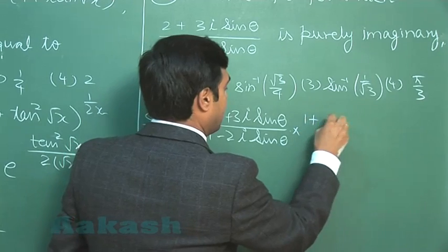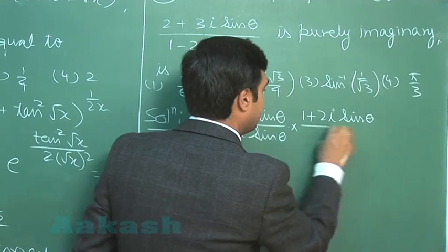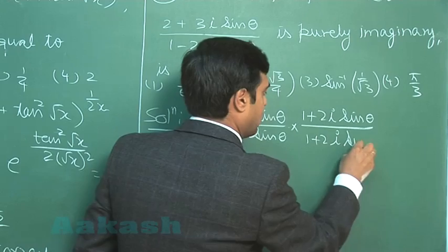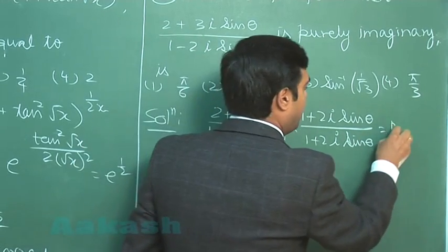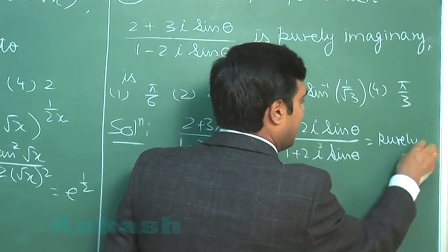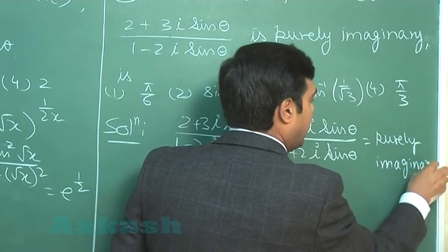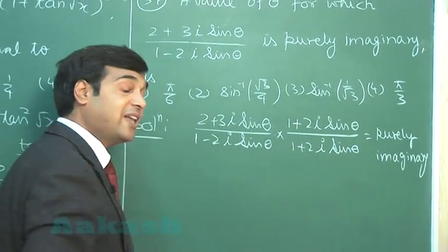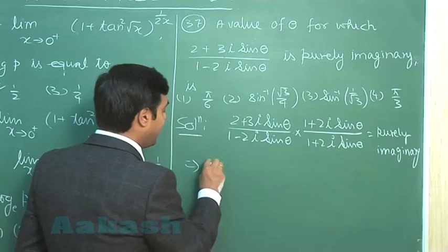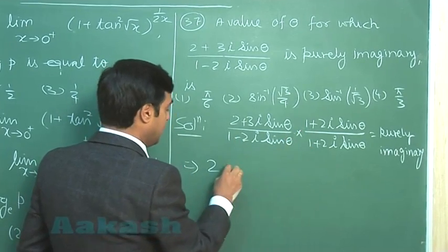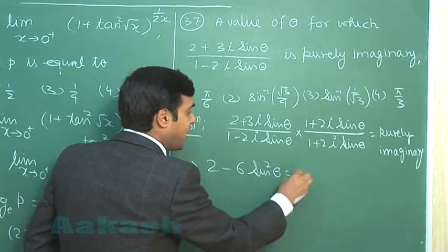Let us multiply and divide by the conjugate of denominator. So we can see that the real part must be 0. The real part is obtained as 2 - 6 sin² θ equals 0.